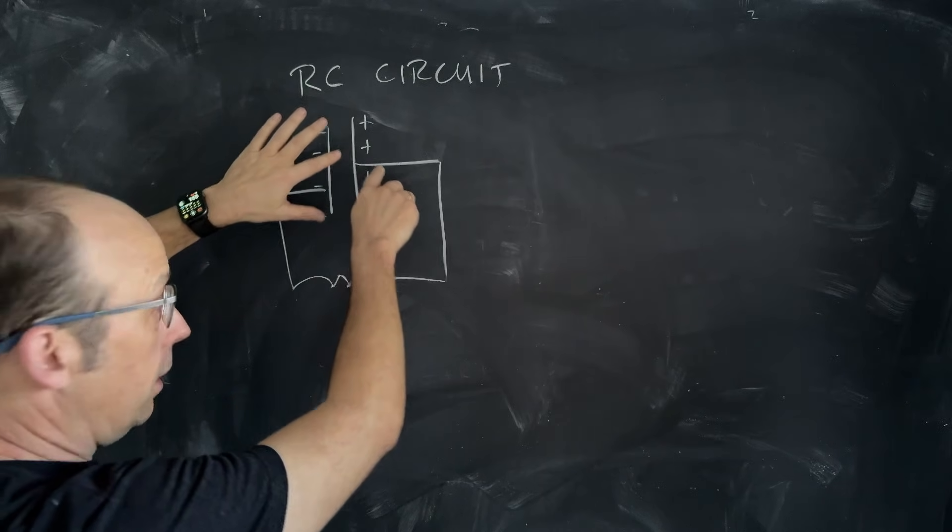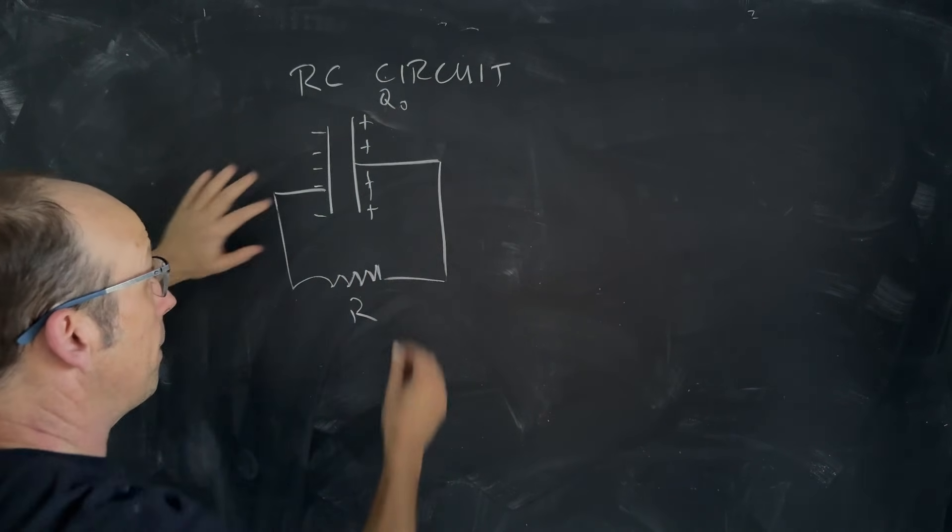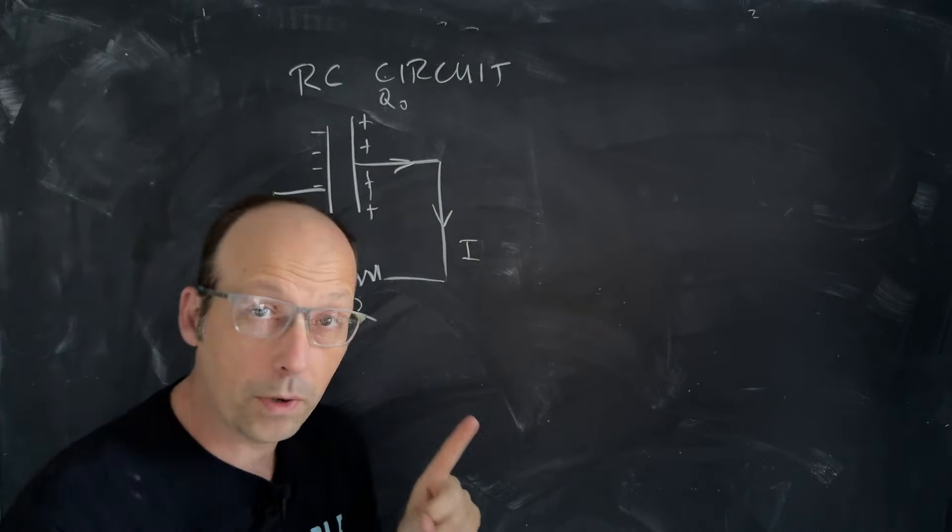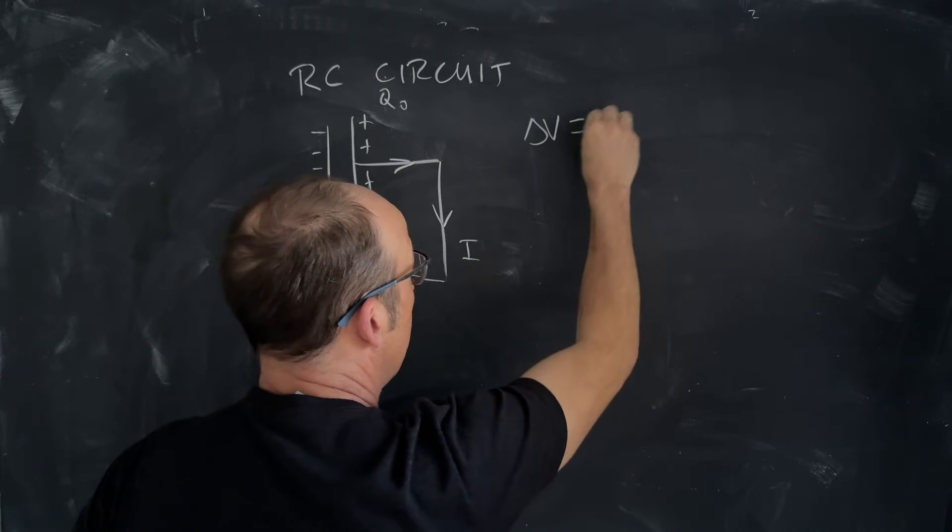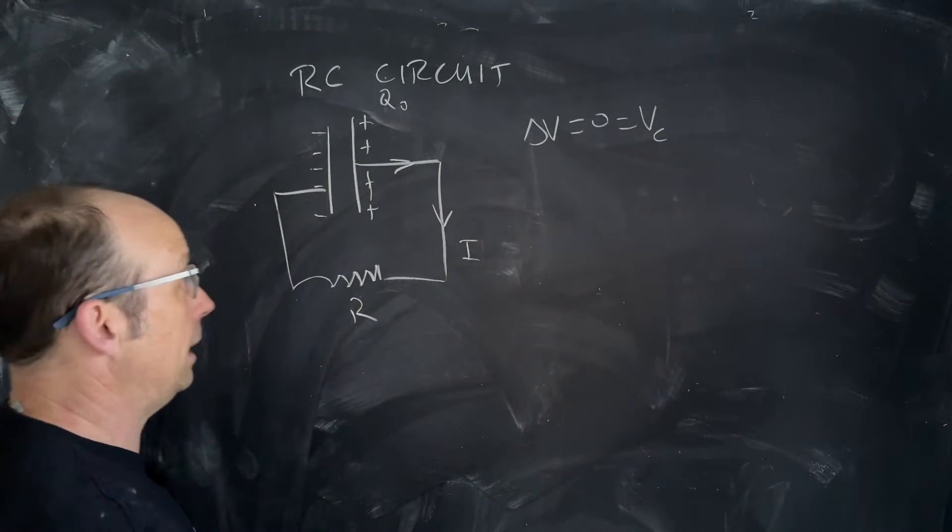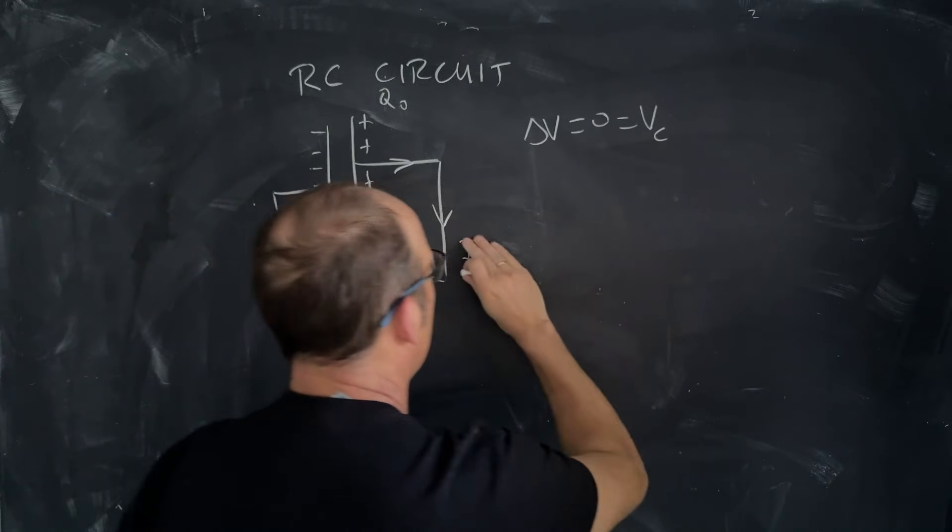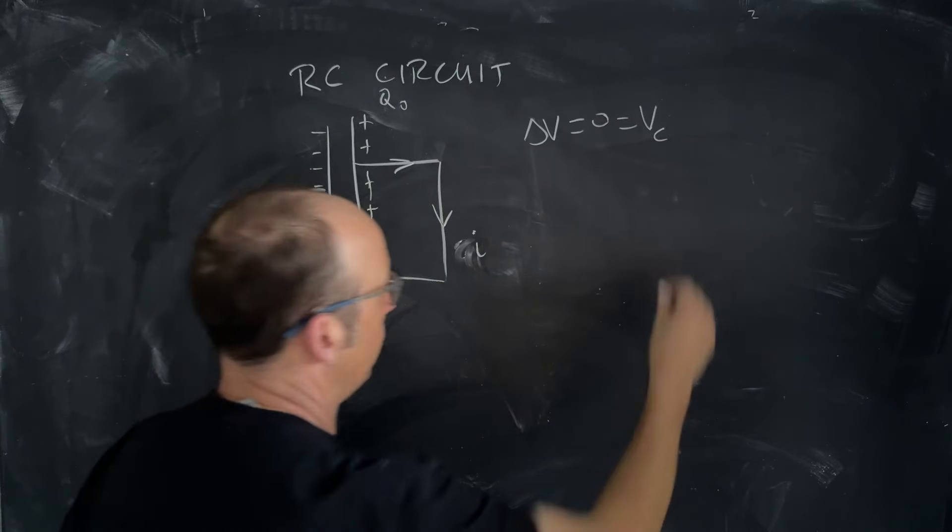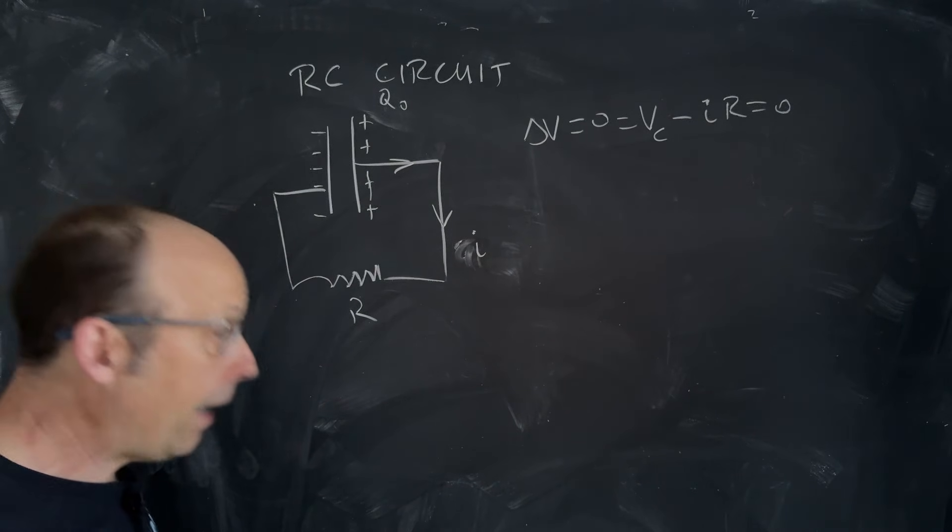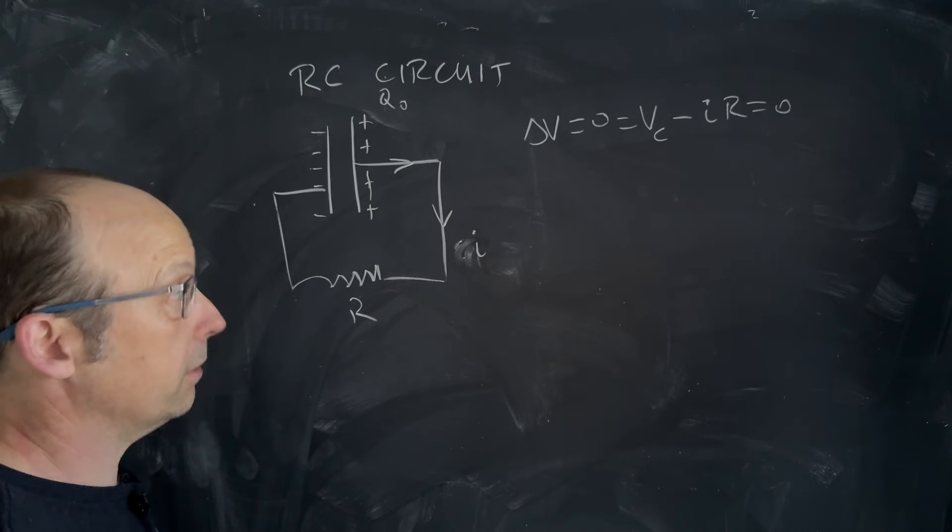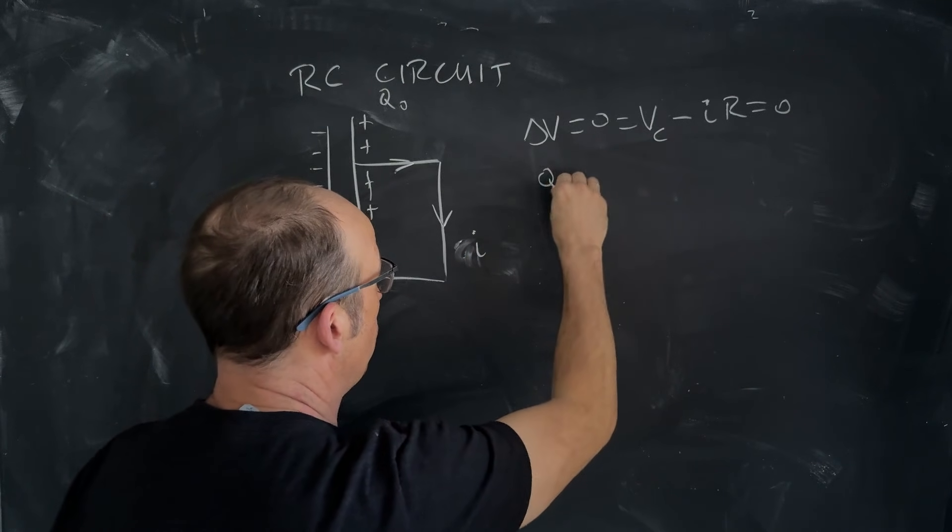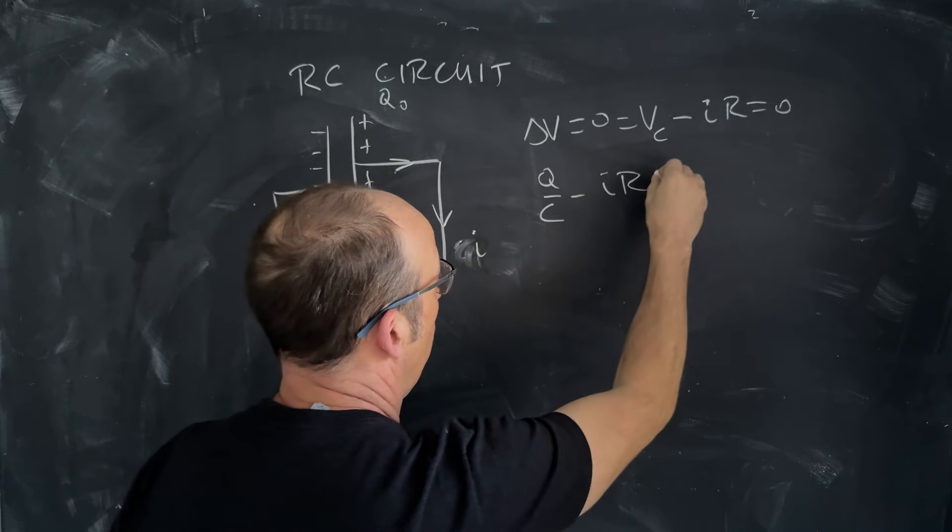So we have a capacitor in series with the resistor, and this charge starts with a charge Q0. If there's charge on this capacitor, that's going to create an electric current going this way, I. Now we can use the loop rule. The loop rule says that the change in potential around that loop is zero. If I start from here to there, I get VC, the voltage across the capacitor, and then I have this current passing through the resistor. So I'm going to use lowercase i. I hate that, but that's what I'm going to do. Minus ir, and that's equal to zero.